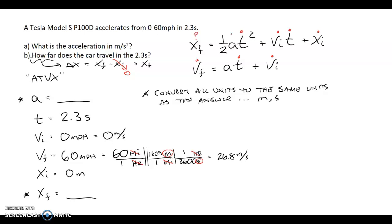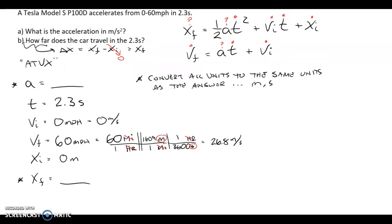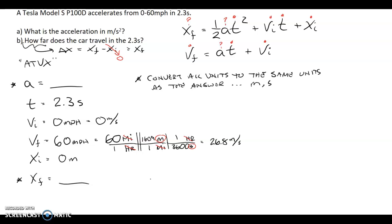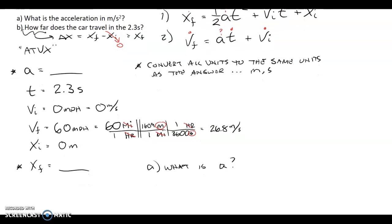Anywhere that I have an equation with only one missing piece, I can always solve for that. In part a, I want to find what is the acceleration. If you look at my equation, I could use one of those two equations. We'll call this equation one and equation two. And I can use equation two. If you notice, the only thing missing is a.